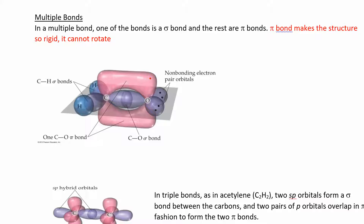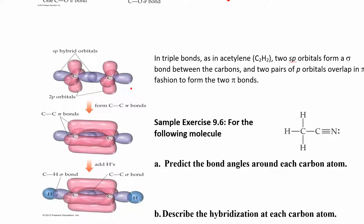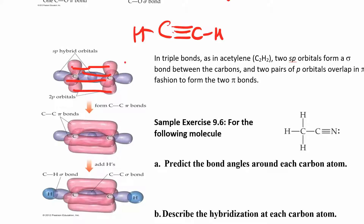In this picture, the single bonds are sigma overlaps, and the double bond is one sigma and one pi — the purple overlap is sigma, the pink is pi. For acetylene (C₂H₂), you have a triple bond: one sigma and two pi bonds. The pink p orbitals overlap in two ways — one in front and one in the back — each representing one pi bond, giving you two pi bonds plus one sigma.